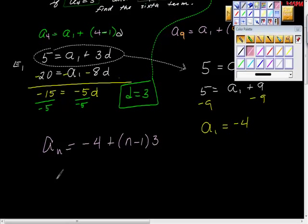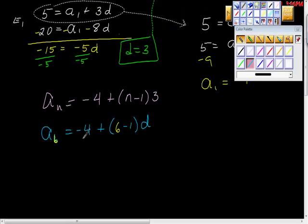So check me out. Now to find the sixth term, we're done. This is in record time. We want the sixth term. This says the nth term, so if we want the sixth term, then we want a sub 6, which means the sixth term. And it would be negative 4 plus this 6 is this 6 minus 1 times 3.